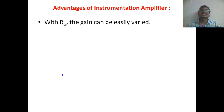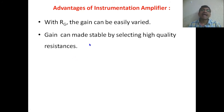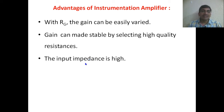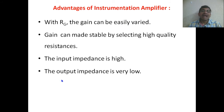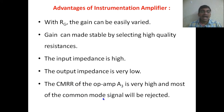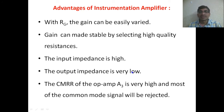Advantages of the instrumentation amplifier: the gain can be easily varied using single resistor Rg; the gain can be made stable by selecting high-quality resistances; the input impedance is very high because two op-amps are used at the input stage; the output impedance is very low so we can drive many devices; and the CMRR of op-amp A3 is very high, so most common-mode signals will be rejected.